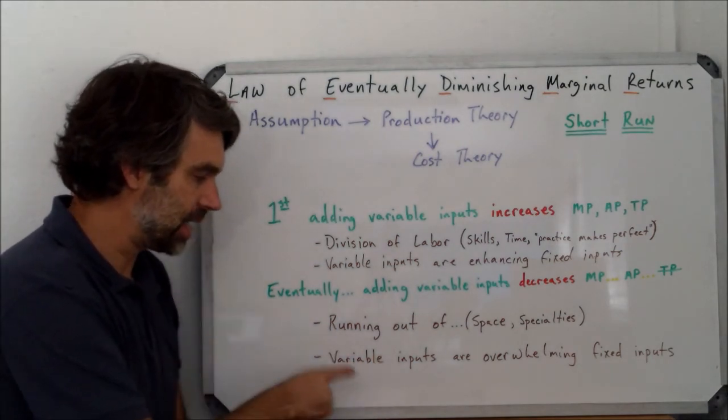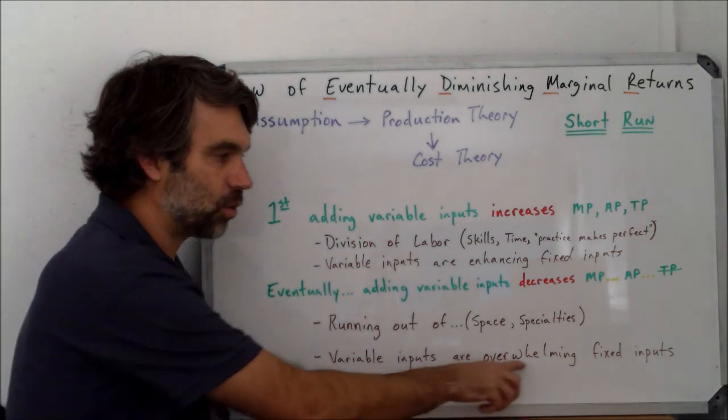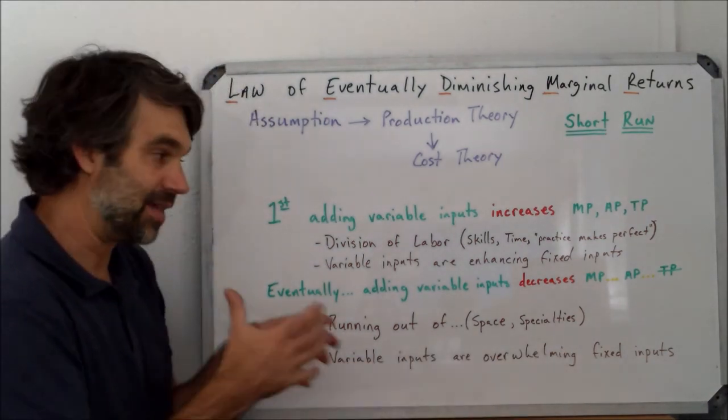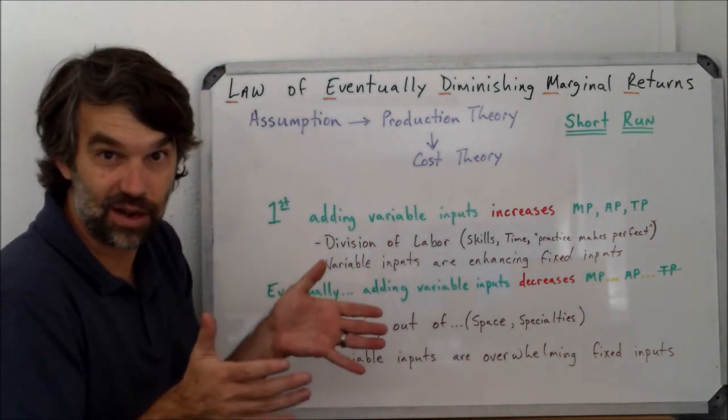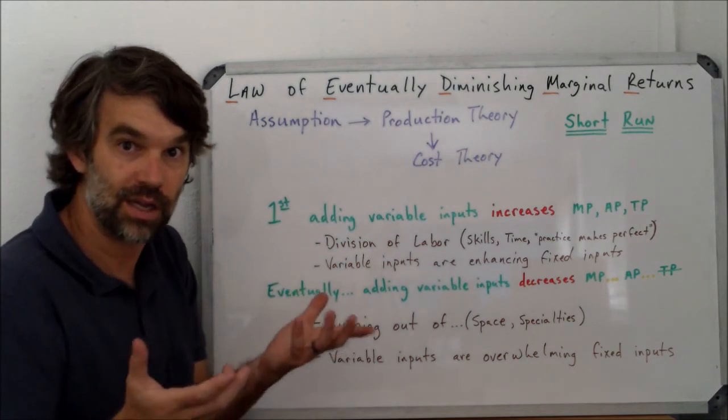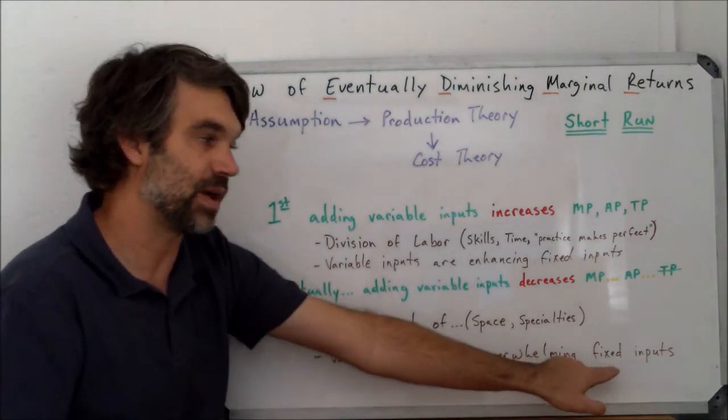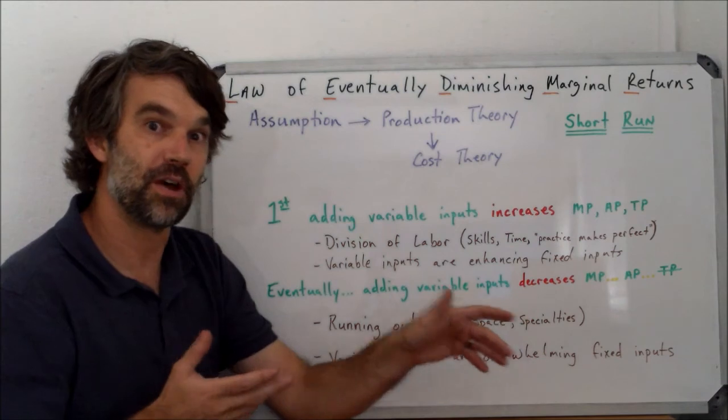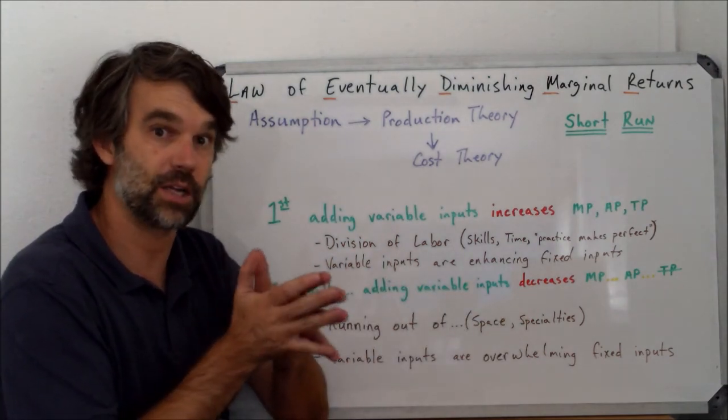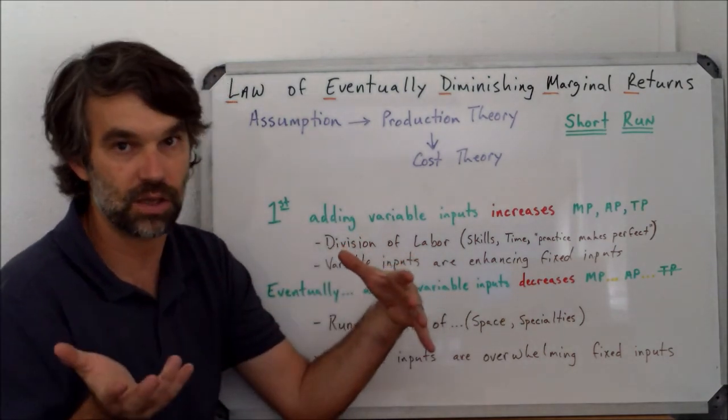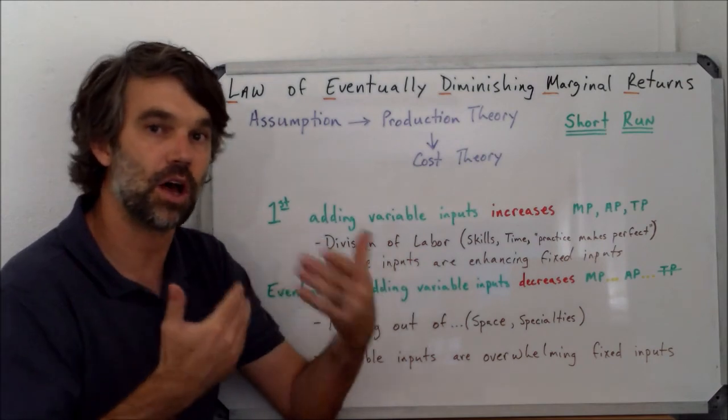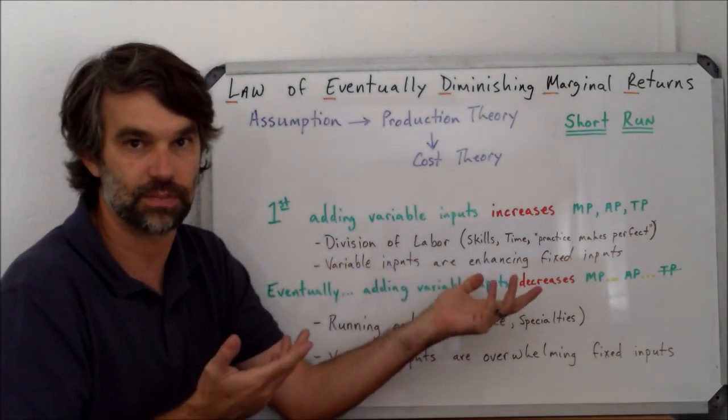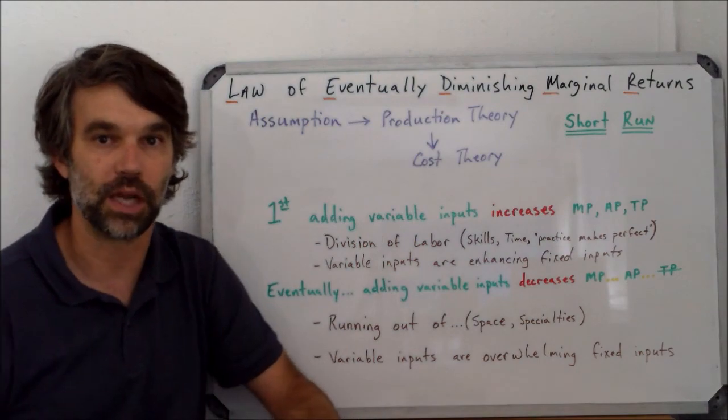So in this case, what we can say is that the variable inputs are overwhelming the fixed input. And at this point, if I've got 50 bakers in my room, that's no good. So now what I need to do is I need to change my fixed input. Remember, though, the second we start to talk about changing all of the inputs, including the fixed inputs, that's a long run or planning stage part of the discussion. Any questions or comments, leave them below.